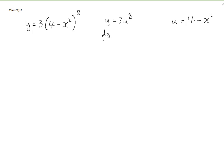So y is 3u⁸, that's a simple function, and u = 4 - x². Then I can easily differentiate those two, so this is dy/du, because it's telling me how y changes when u changes, so it's 24u⁷. And then how does u change when x changes, that's du/dx. This is constant, this differentiates to -2x.